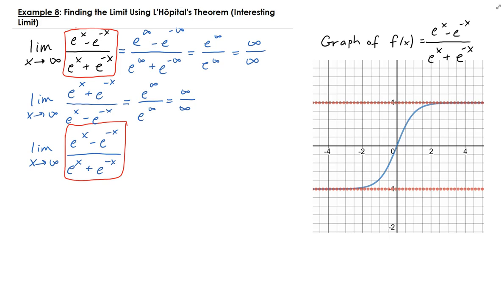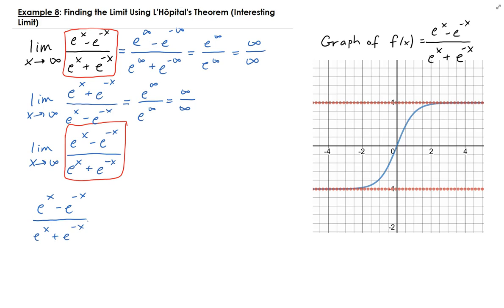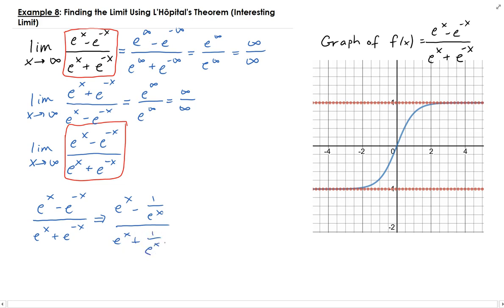Otherwise this is just going to continue happening. So let's go back to the original limit. Looking at the function: we have e to the x minus e to the negative x divided by e to the x plus e to the minus x. We can rewrite this algebraically as e to the x minus 1 over e to the x, divided by e to the x plus 1 over e to the x. Then we can go ahead and multiply the top and bottom by e to the x.